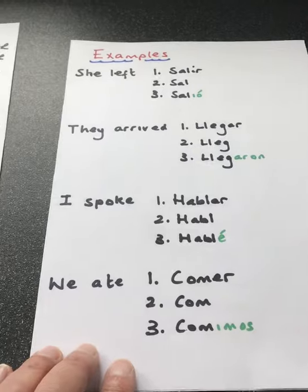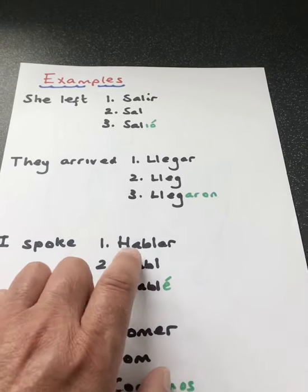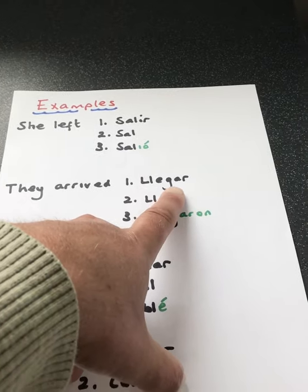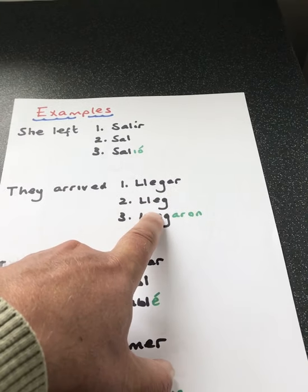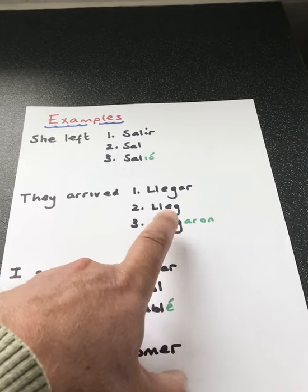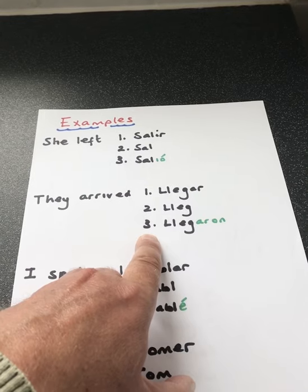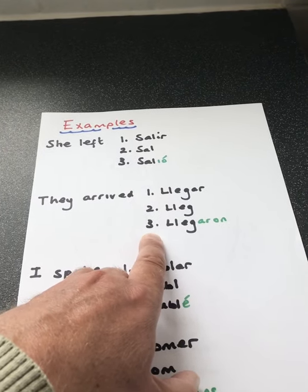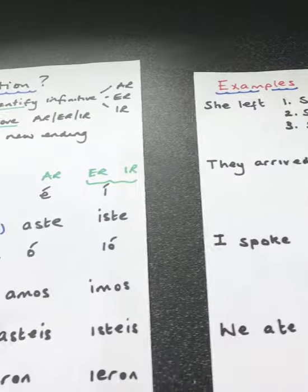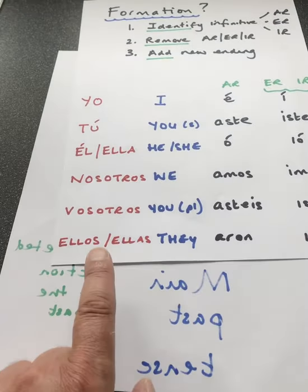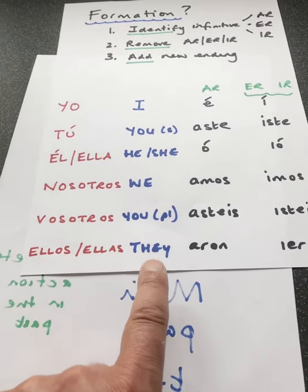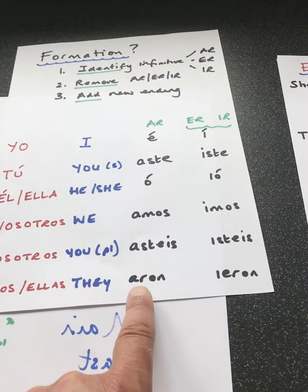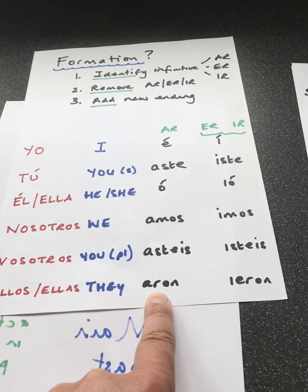Example number two: they arrived. Identify the infinitive — it's an AR verb. Remove the AR at the end. Stage three, let's add the new ending. It is AR. And there's my ending for that one.